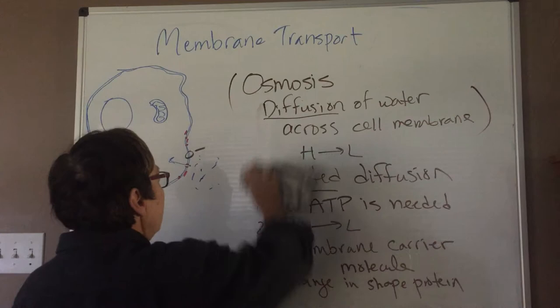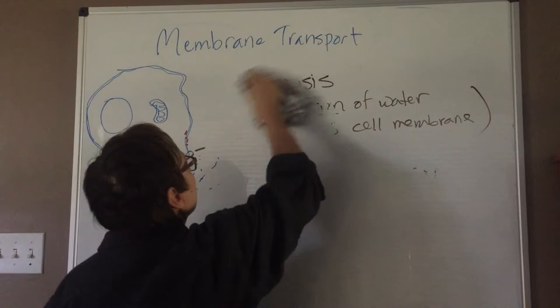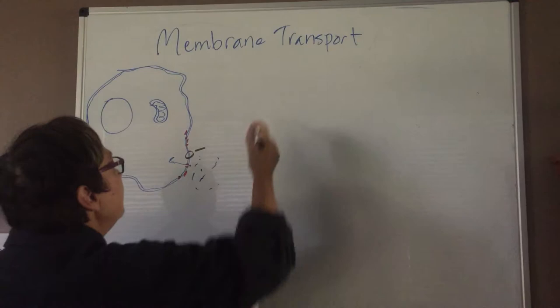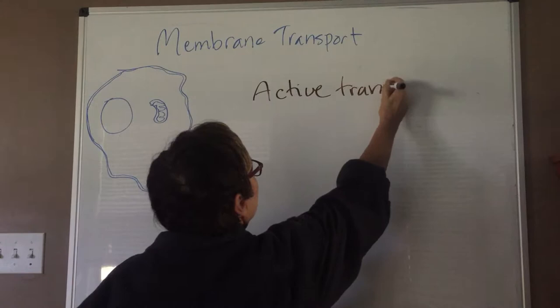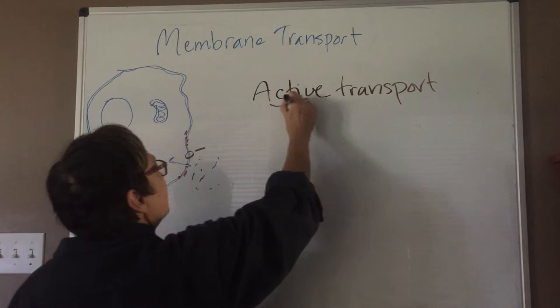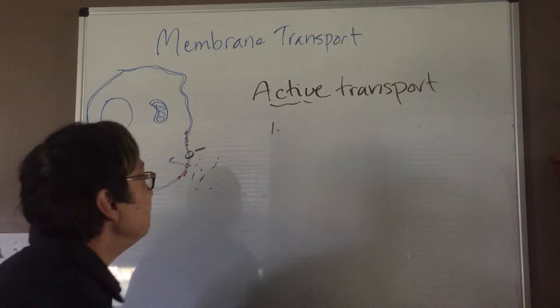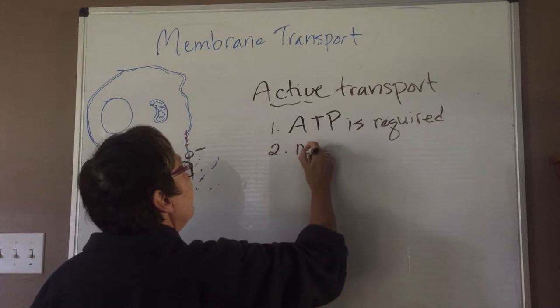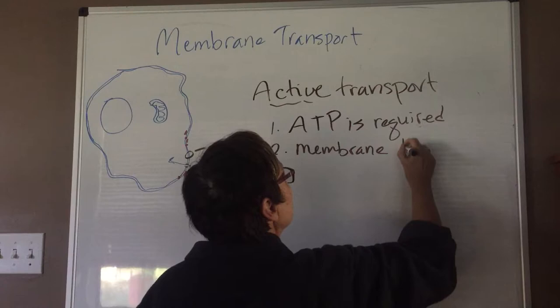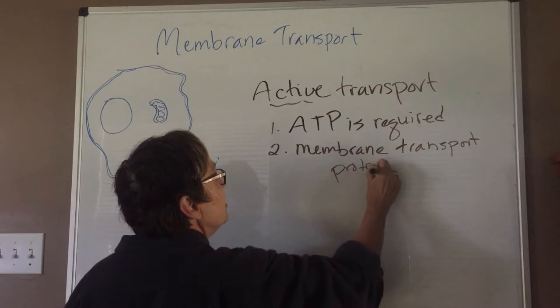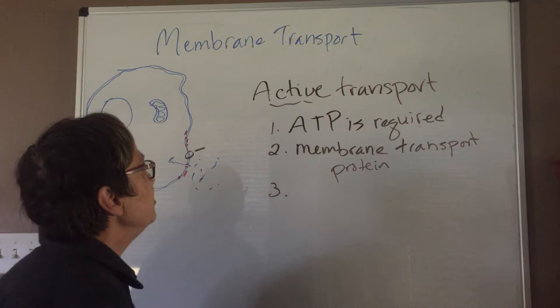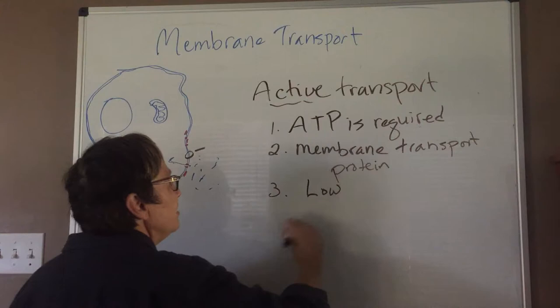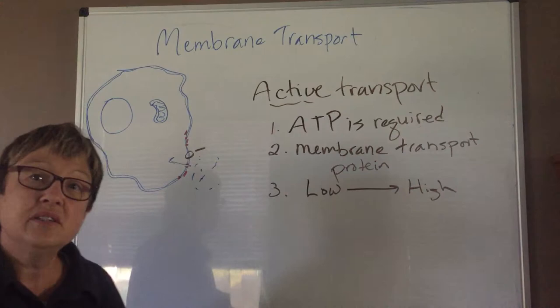There are other categories that we will mention here. There is a form of transport called active transport. And the term active implies that some energy is required. And that is true. ATP is required. It does involve a membrane transport protein or a membrane carrier. And the unusual feature of this type of transport is that we're going to move something from an area of low concentration to an area of high concentration.